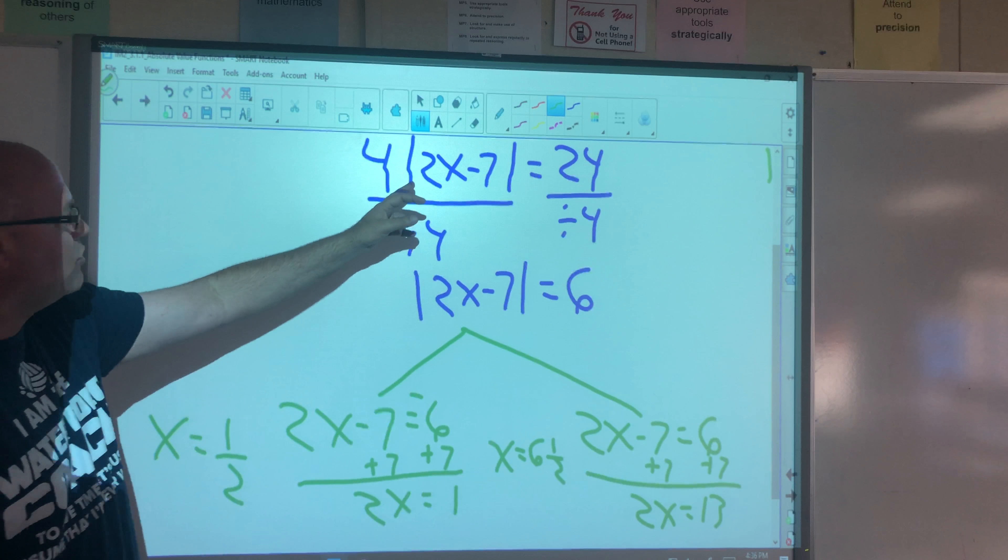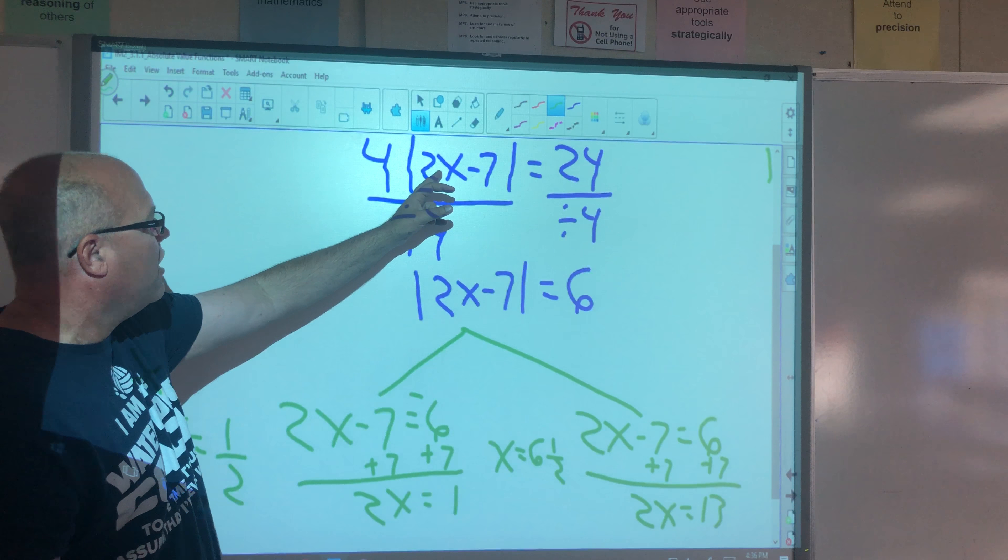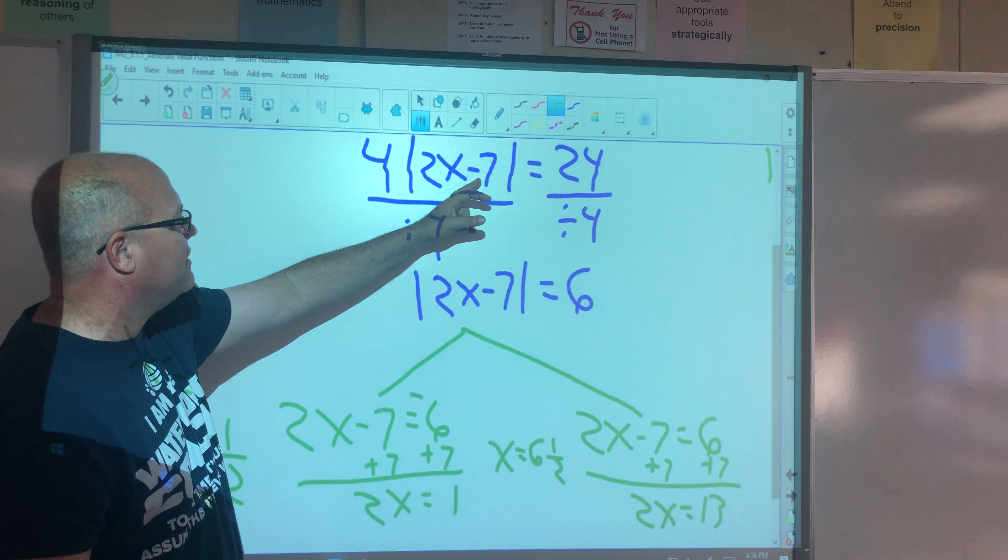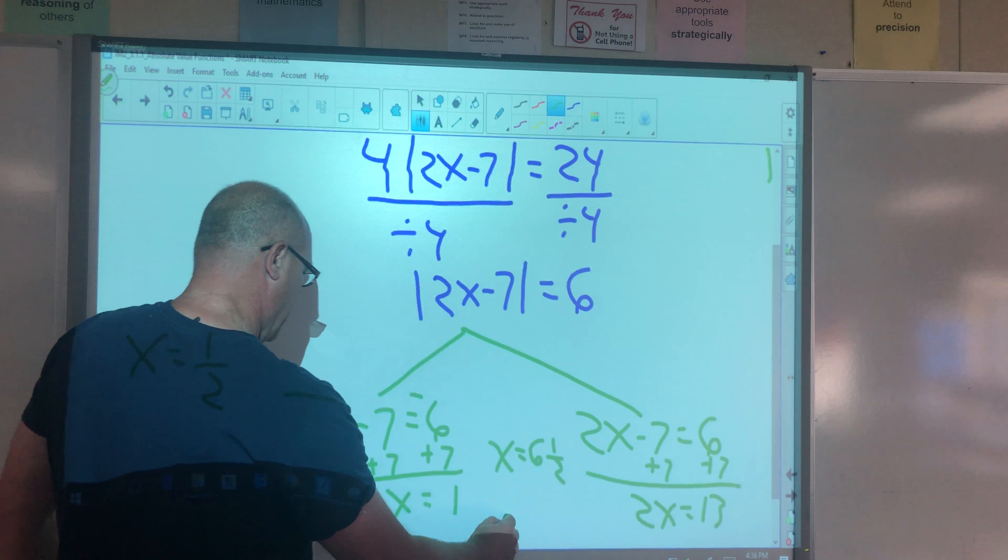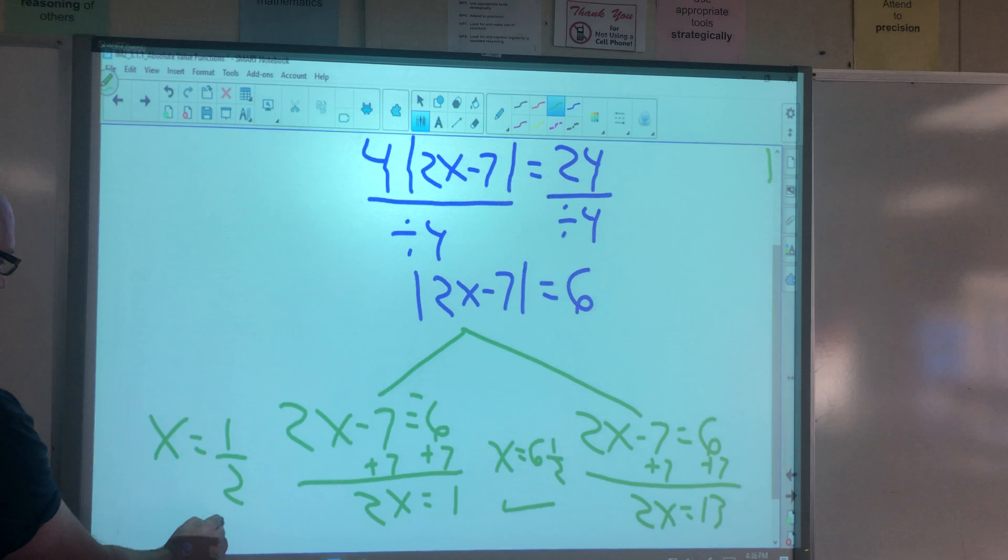x is 6 and 1 half. 2 times 6 and 1 half is 13. 13 minus 7 is 6. Absolute value of 6 is 6. 6 times 4 is 24. Check.